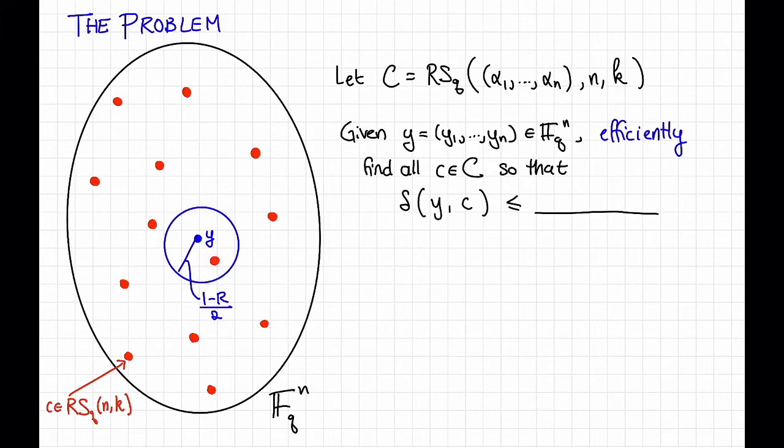The point of list decoding is that I can look at a slightly bigger ball and hope that there are not too many codewords in that slightly bigger ball. So I'm going to look at a slightly bigger ball, maybe it looks something like this, of some radius, and my goal here is to efficiently return all of these codewords that live in that ball when I'm given y as input.